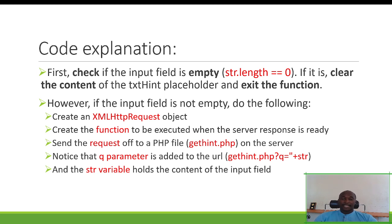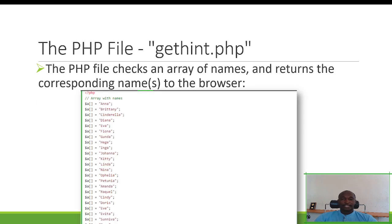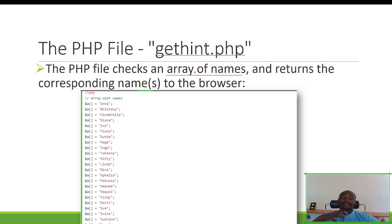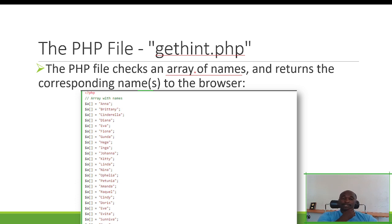Now let's look at the PHP file that receives the HTTP request — that file is 'getint.php'. This file has an array of names. Normally you would save these names in your database, but for this example they're stored in an array so that as you type, if you start with an 'A', it gives you all the names that start with 'A'. But normally you'd be searching against a database rather than an array.